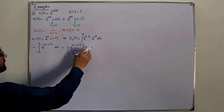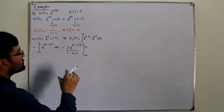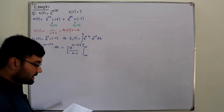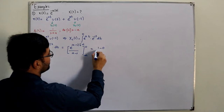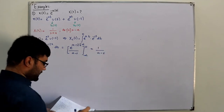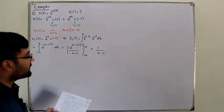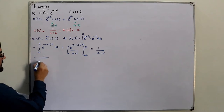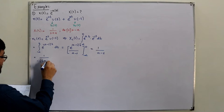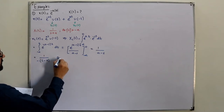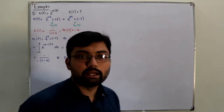Putting the limit 0 gives e^0 = 1. Putting -∞ and assuming (a-s) is positive gives e^(-∞) = 0. So we get 1/(a-s). Taking a negative common from the denominator gives -1/(s-a).